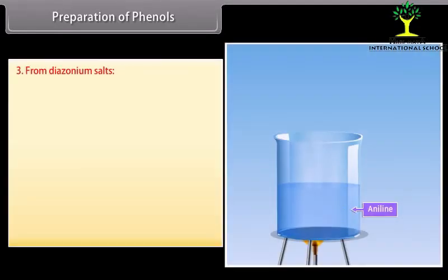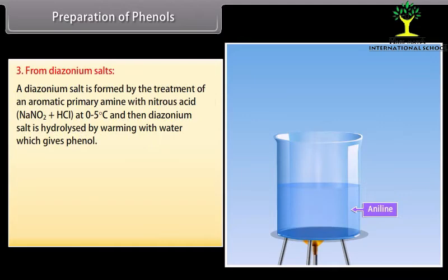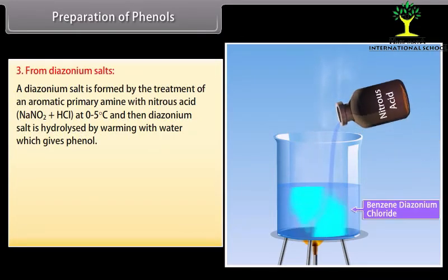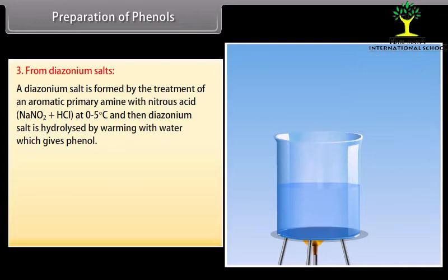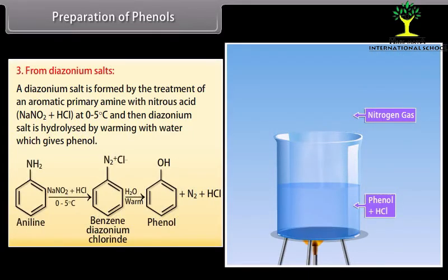Preparation of phenol from diazonium salts: a diazonium salt is formed by the treatment of an aromatic primary amine with nitrous acid at 0 to 5°C. The diazonium salt is then hydrolyzed by warming with water to give phenol. An aniline is treated with nitrous acid at 0 to 5°C to form benzene diazonium chloride, which on adding warm water gives phenol, nitrogen and hydrochloric acid.